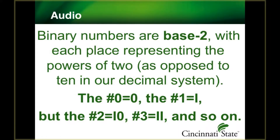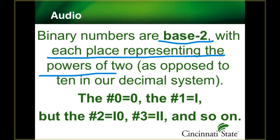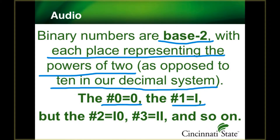Binary numbers are what is called base two, meaning each place represents a power of two, as opposed to our normal decimal system, which uses digits zero through nine. In a binary system, you have to combine zero and one into multiple combinations. Just like in decimal we combine digits to make larger numbers — 10, 20, 35 — in binary you combine zeros and ones to represent large numbers.